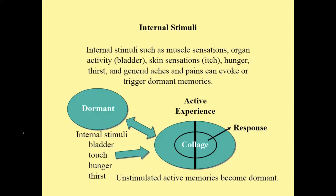Internal stimuli such as muscle sensations, organ activity, the bladder, skin sensations, itch, hunger, thirst, and general aches and pains can evoke or trigger dormant memories. Unstimulated dormant memories remain dormant. Stimuli are represented in the memory structure — when a stimulus occurs, the memory structure is activated. Unstimulated active memories become dormant. External stimuli are sensory experiences such as hearing, seeing, smelling, touching, and tasting that evoke dormant memories into the active experience. Memory structures with specific external sensory experiences associated with them will activate. Again, active memories not stimulated become dormant.